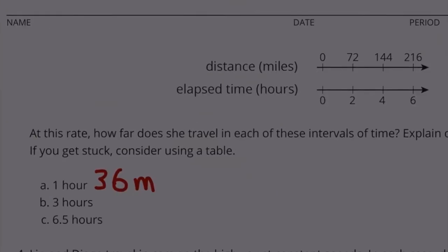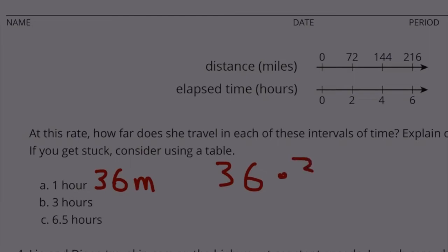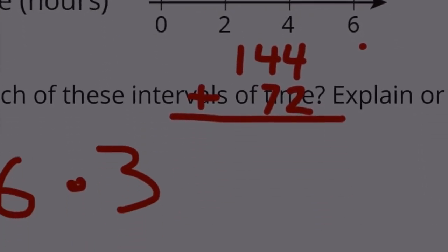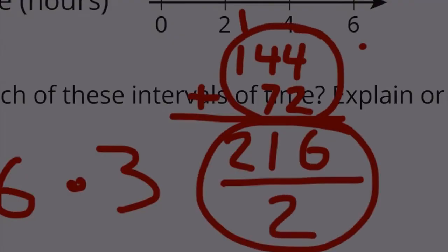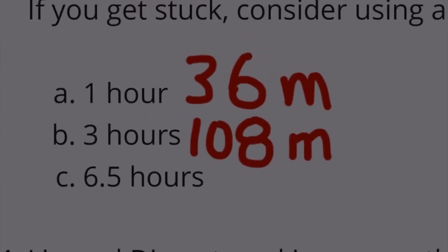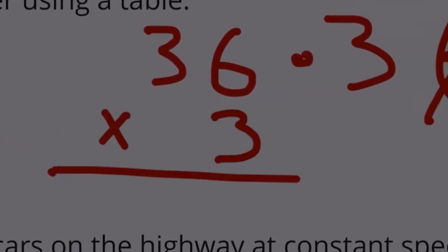Three hours is just going to be 36 times 3, or the exact middle between 72 and 144. This space right here between 72 and 144: 144 plus 72 is 216. Now we need to find the average between these two numbers, so we divide this by 2. 216 divided by 2: half of 200 is 100, half of 16 is 8, so 108. In 3 hours, 108 miles would be traveled. 108 should be the same answer as 36 times 3. Let's test that out: 6 times 3 is 18, 3 times 3 is 9 plus 1 is 10, so 108.